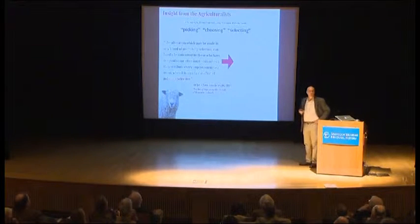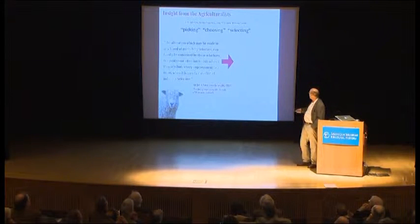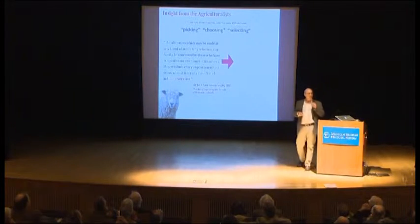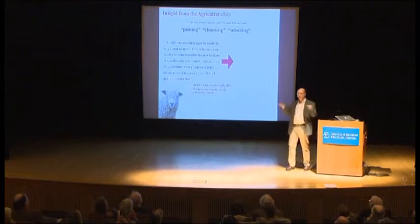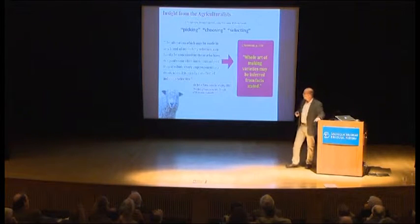He copied out an extract from Seabright's 1809 Art of Improving Breeds of Domestic Animals. What Seabright is getting at is that you do not make new breeds just by crossing existing breeds — you improve breeds through judicious selection. Darwin very quickly realized that this process, which he eventually dubbed artificial selection, was the key to making new varieties and breeds. Then the question became: that's what happens in the barnyard and garden — how does this happen in nature?